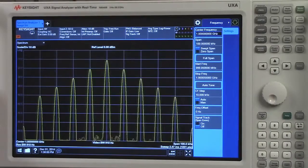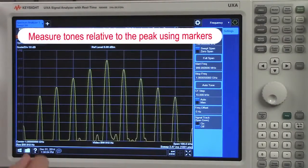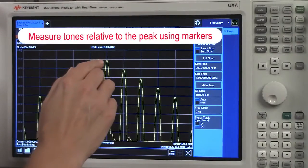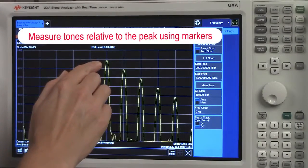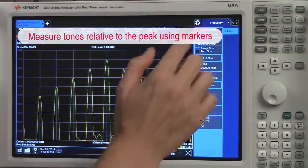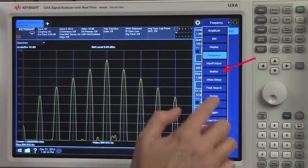I have nine multi-tones as the test example. How will I be able to measure the frequency and amplitude of these other tones relative to the maximum peak? First, I can open up our marker menu.